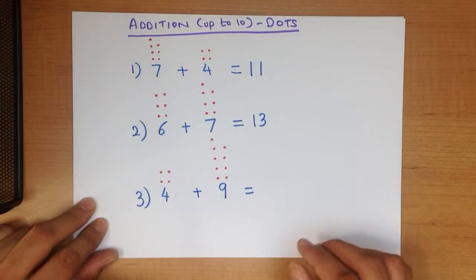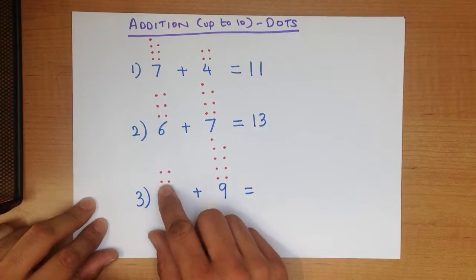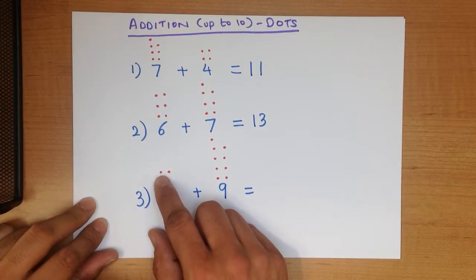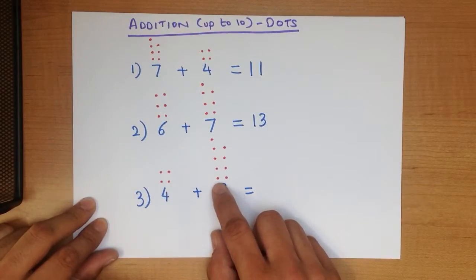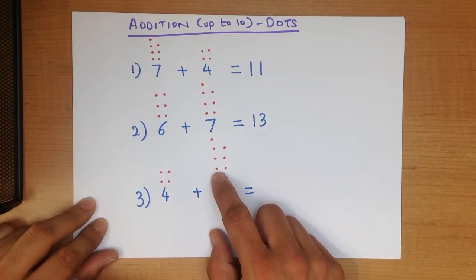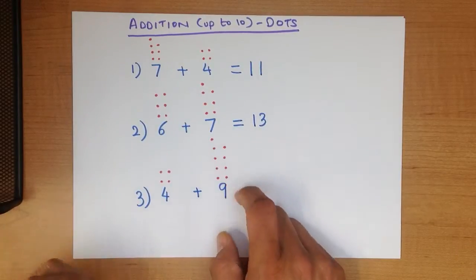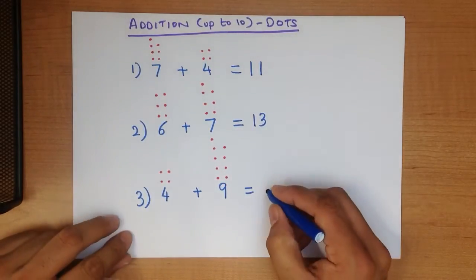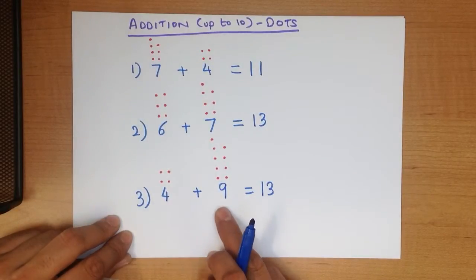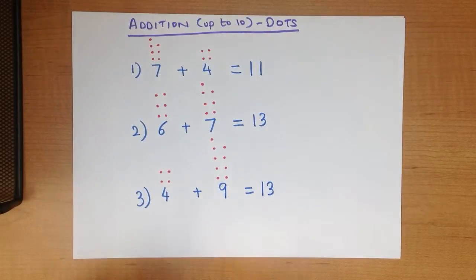Now let's count how many dots there are: 1, 2, 3, 4, 5, 6, 7, 8, 9, 10, 11, 12, 13. 4 plus 9 equals 13. It's as simple as that.